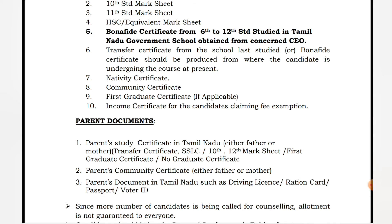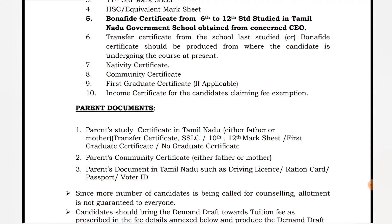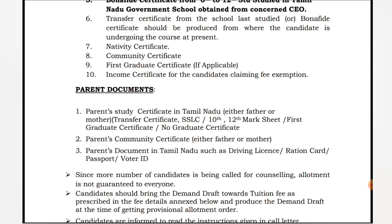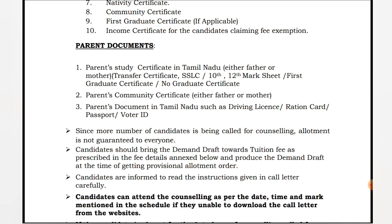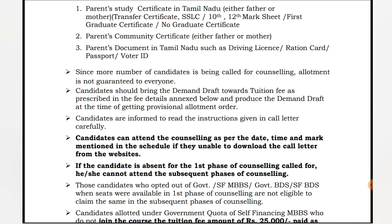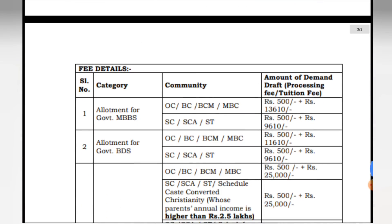For college admission, you need an income certificate for fee concessions. If your income is 2.5 lakhs or below, you can avail fee benefits. There are 3 key documents needed — 10th, 11th, and 12th certificates — along with a community certificate and family certificate. For parent identification, documents such as Aadhar card, ration card, or driving license (either father's or mother's) are required.